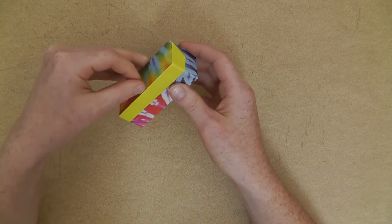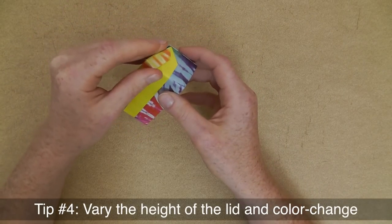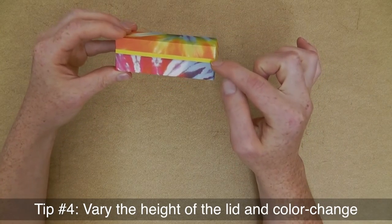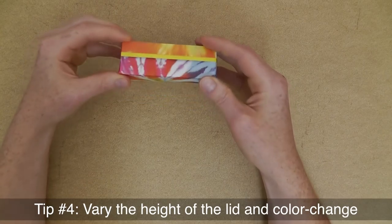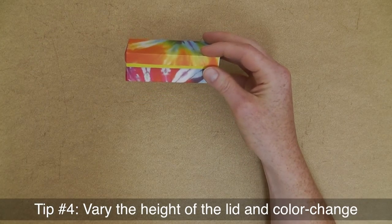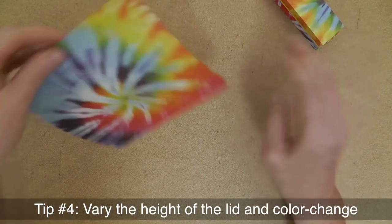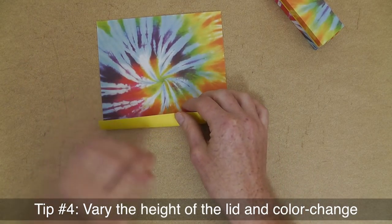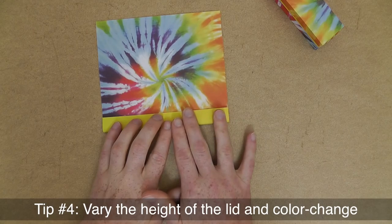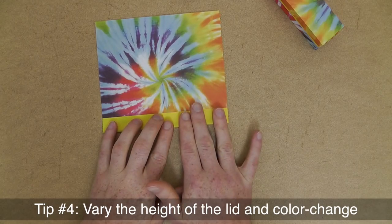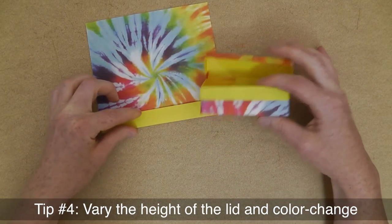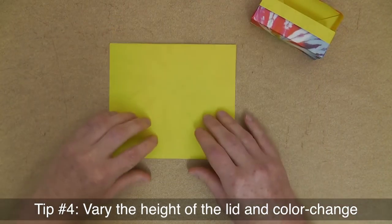Now tip number four is again about changing the visuals of the box. As you can see here, even in the closed state, you can see that color change. So how did I achieve that? Well, it's quite easy actually. Say this is your patterned paper. Now you're going to fold in, before you start with anything, the section that you want the color change to be.